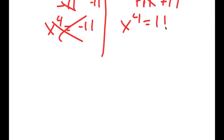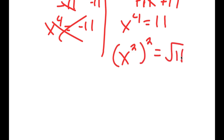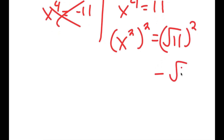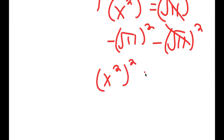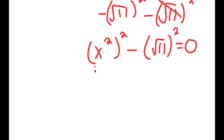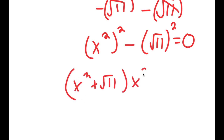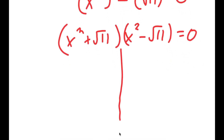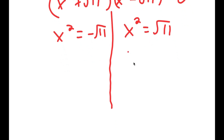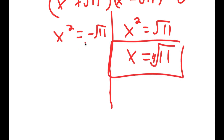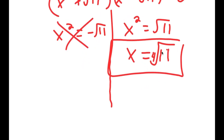For x to the power of 4 equals 11, I can rewrite this as x squared to the power of 2 equals the square root of 11 squared. Subtracting the square root of 11 squared on both sides gives x squared to the power of 2 minus square root of 11 squared equals 0. This means x squared plus square root of 11 times x squared minus square root of 11 equals 0, meaning x squared equals the square root of 11 and x squared equals negative square root of 11. For x squared equals the square root of 11, x is equal to the 4th root of 11. The other case has no solution, so x equals the 4th root of 11 is my only solution.